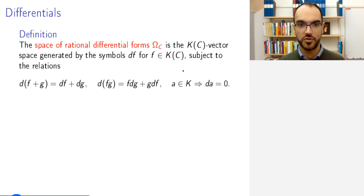But subject to the following relations. First, d(f + g) = df + dg. Second, we have a form of Leibniz rule: d(fg) = f·dg + g·df, and da = 0 for all constants a.